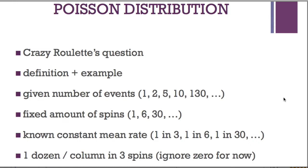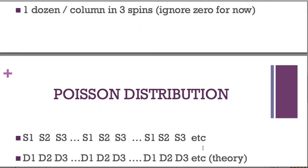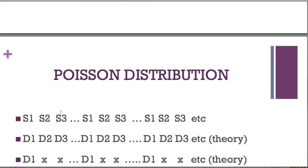In groups of three spins, you will theoretically see dozen one, then the next three spins dozen one again, then the next three spins dozen one. In reality it's spin one, two, three, four, five, six, seven, eight, nine — but we cut them in groups of three. We get something like: dozen one, dozen two, dozen three, dozen one, dozen two, dozen three. In a group of three spins we will see a dozen; in the next group of three, another one.